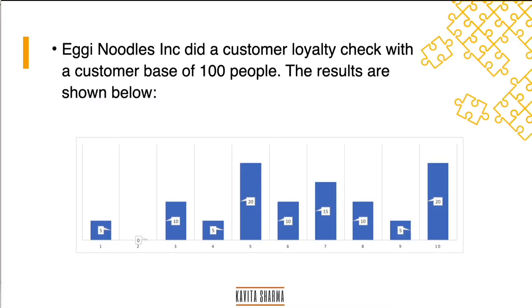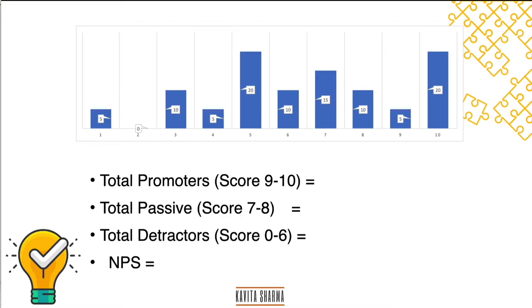Let's understand it with a concept. You have Maggi or Eggy noodles dinner customer loyalty check with a customer base of 100 people. The result which they have got is shown below here. There are people who have given you this score, these are detractors. People who have given you this score, these are passive. And people who have given you these scores are called promoters. So just calculate all of that. I'm going to give a pause here for 30 seconds, or you can click pause on the window and calculate what is the NPS for this particular brand.